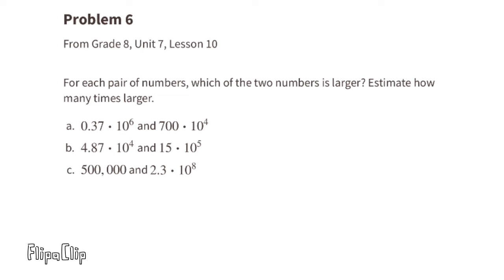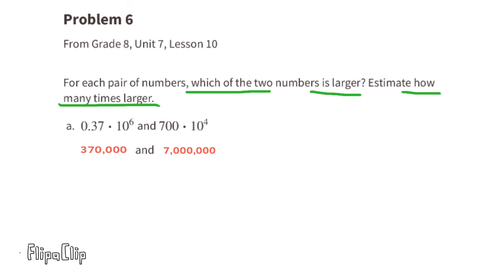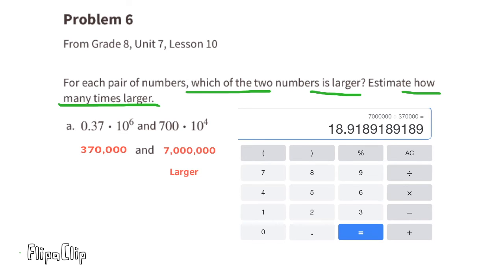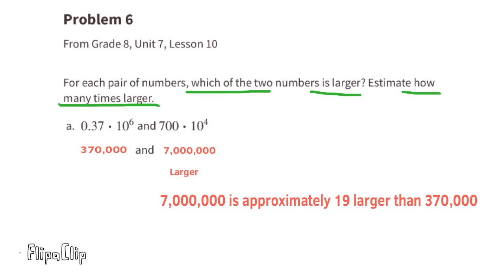Problem 6: For each pair of numbers, which of the two numbers is larger? Estimate how many times larger. Part A: These are equivalent to 370,000 and 7,000,000. 7,000,000 is obviously larger than 370,000. Using a calculator, 7,000,000 is almost 19 times larger than 370,000. That means that 700 times 10 to the fourth power is almost 19 times larger than 0.37 times 10 to the sixth power.